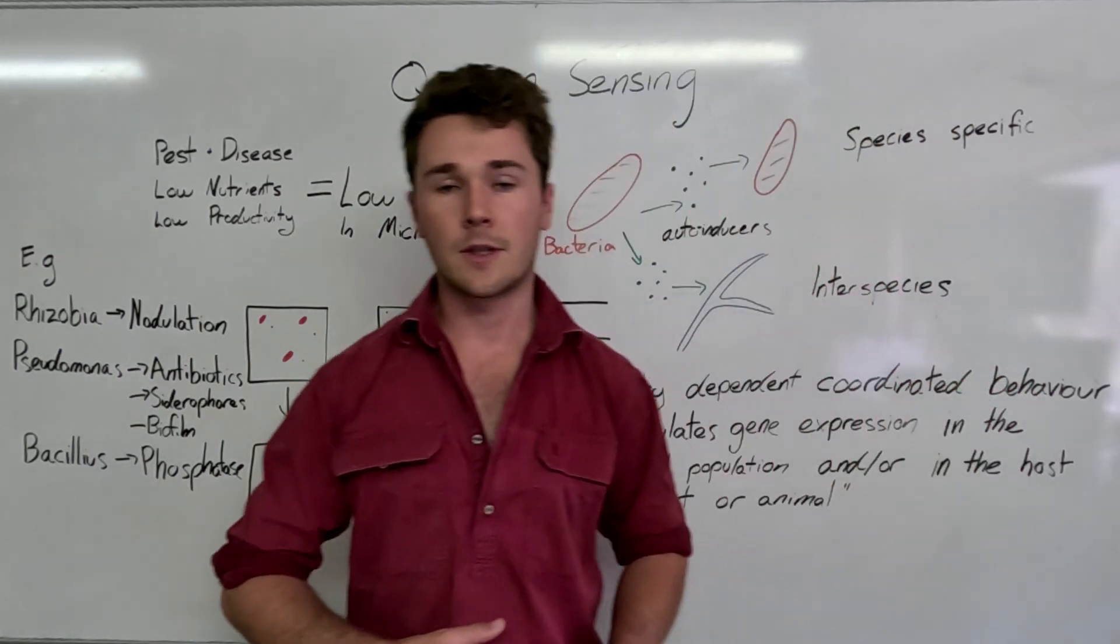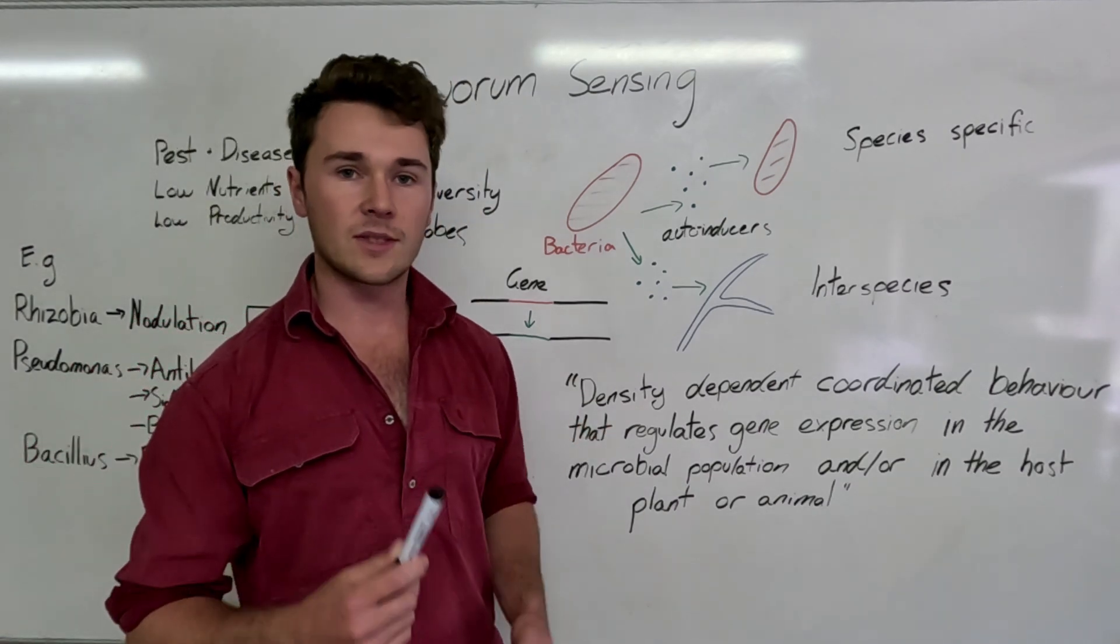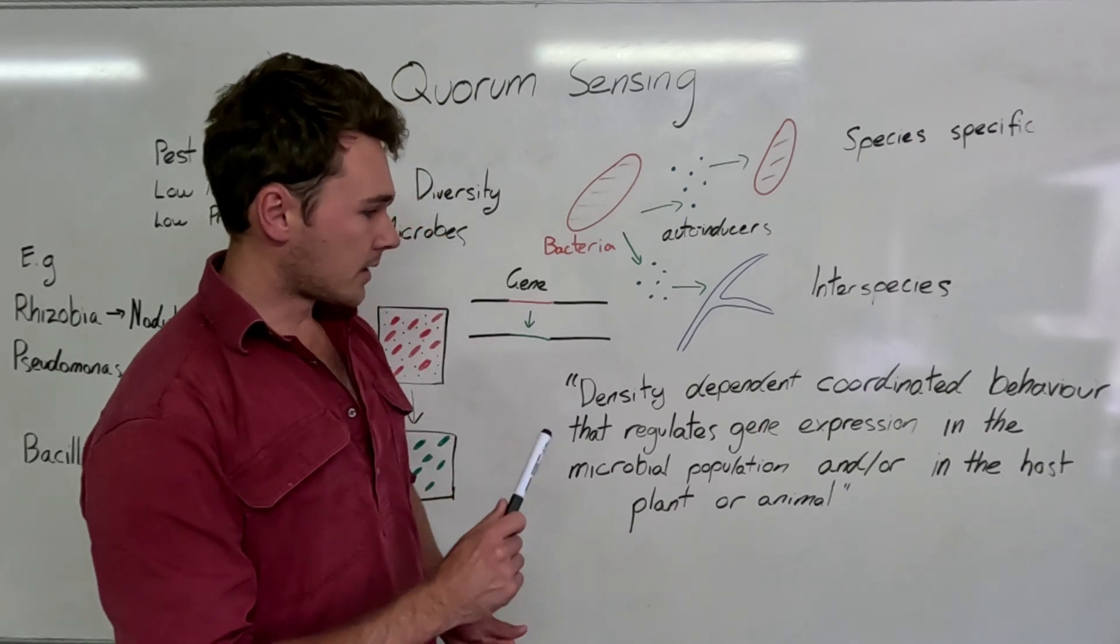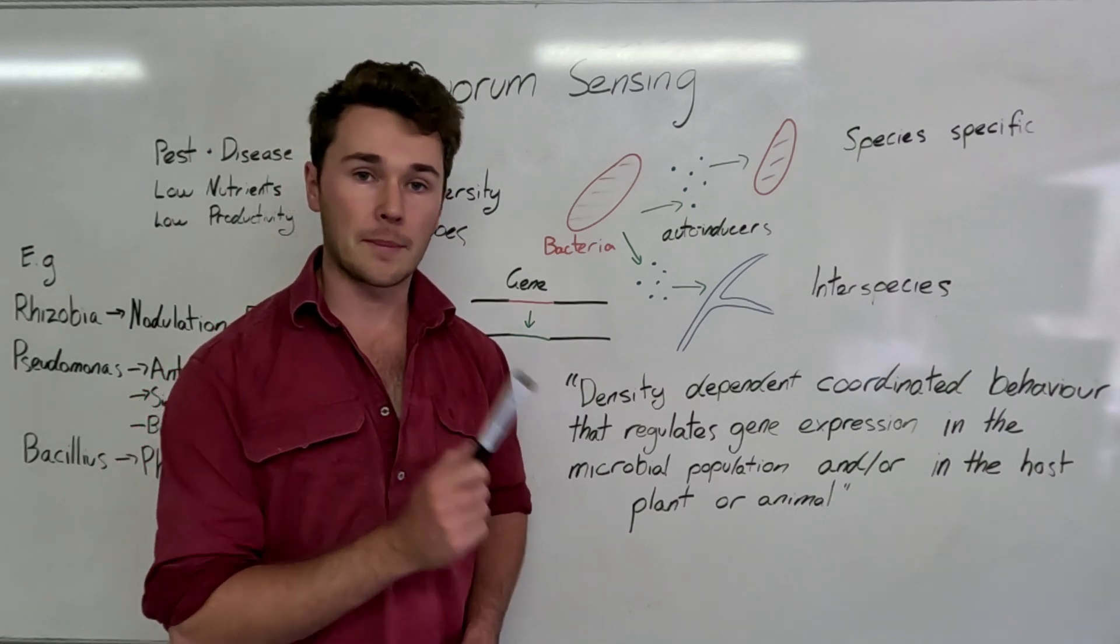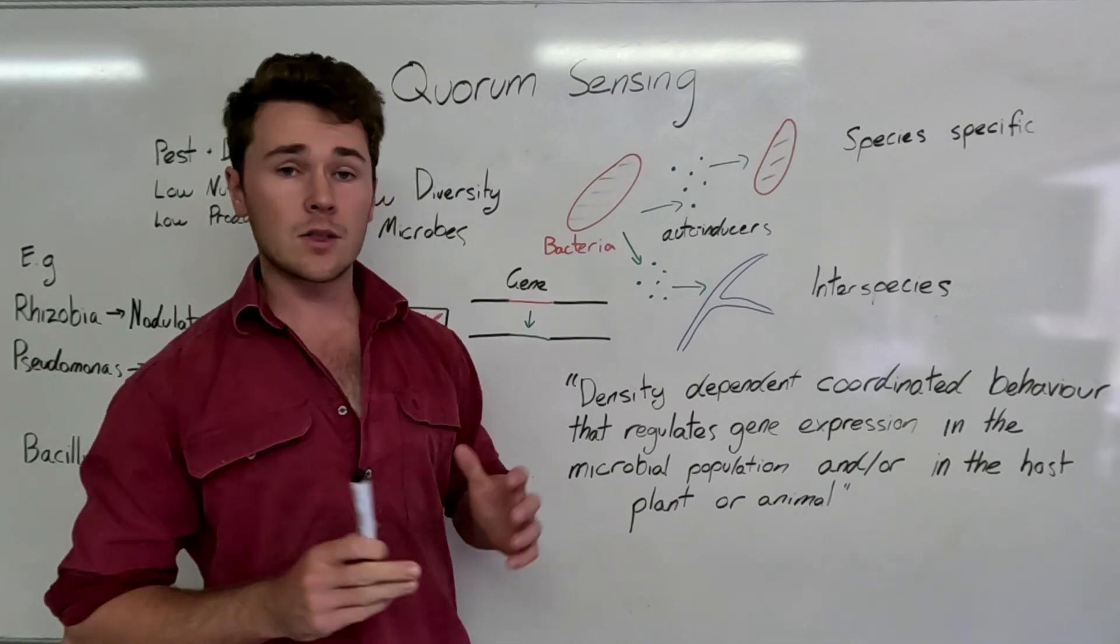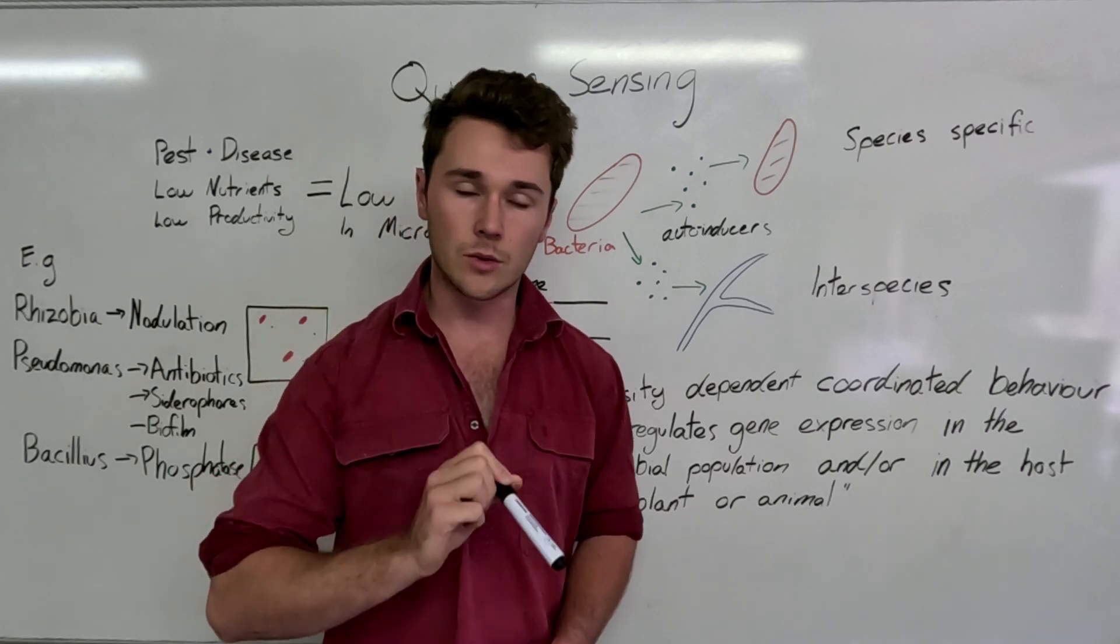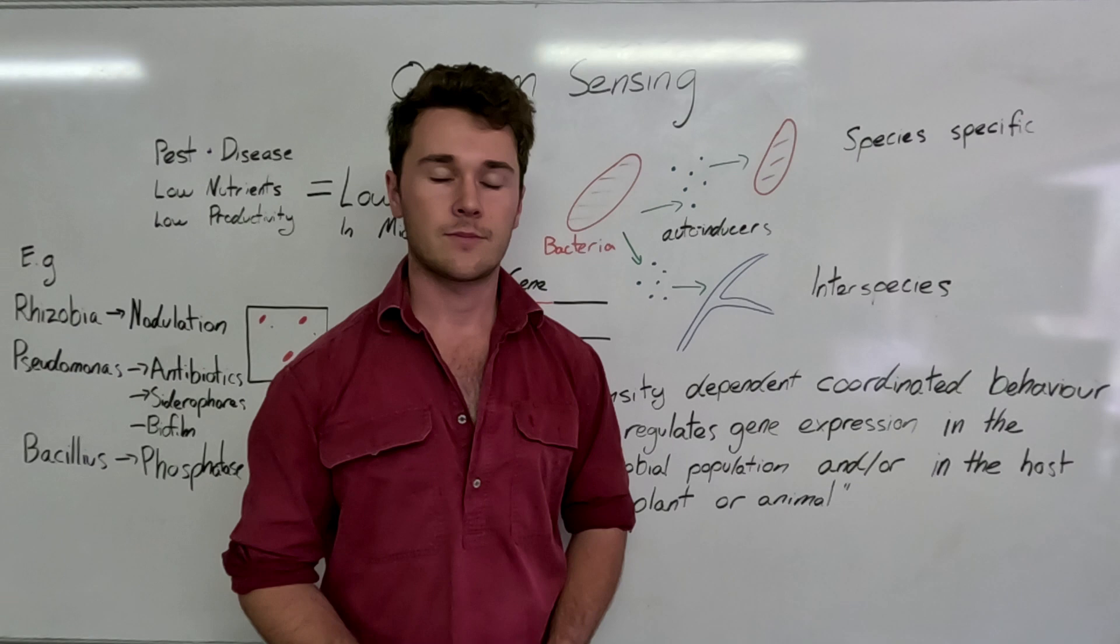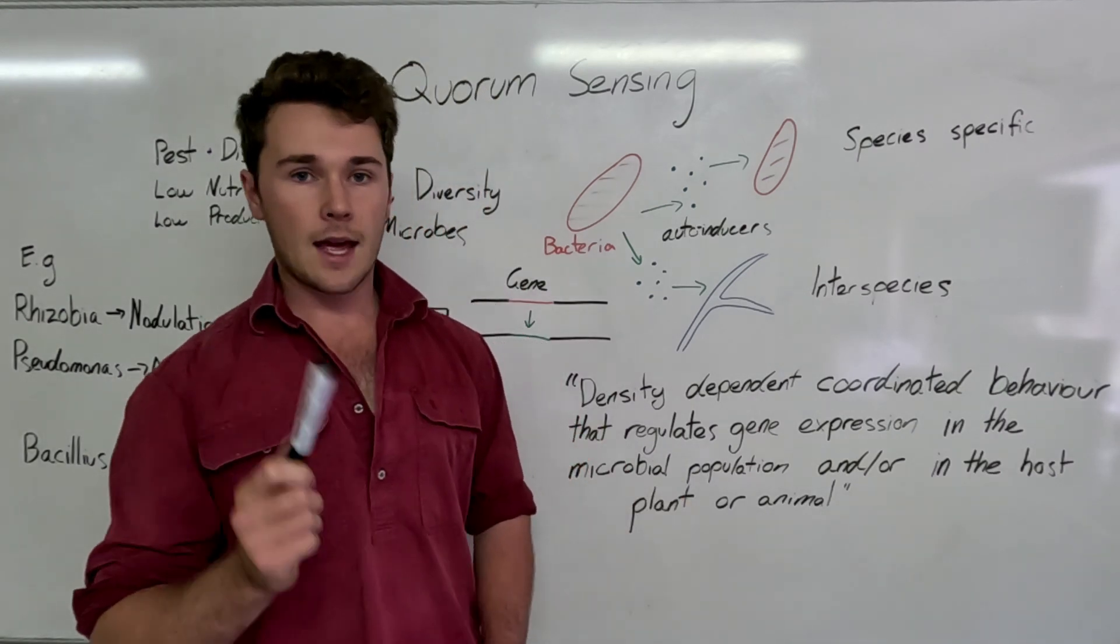So quorum sensing is simply density dependent coordinated behaviour in microbes that typically regulate gene expression. And so that results in gene expression within either the microbial population or the host plant or animal. And this is really interesting because especially when we have soils that are not dense of soil microbes, which means we're missing out on a lot of gene expression.